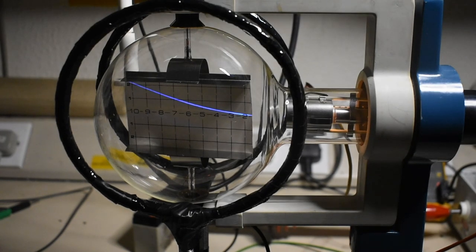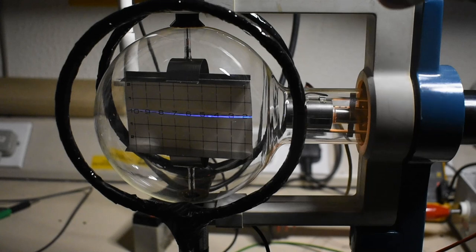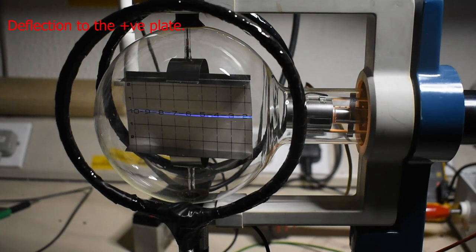I'll now apply a current to the coil here. And as we bring up the current, we can negate the effect from deflection from the positive plate.